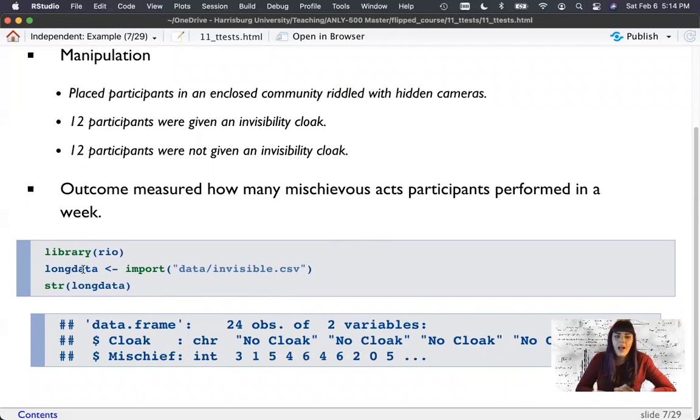And so we have our data set in what's considered long format, where I have a column for my IV, this cloak or no cloak, and a column for my DV, mischievous. This is why I said you just have to know what your data represents. Which is how R likes you to set up your columns for analysis. You just have to know that the groups are either between or within. So at this moment, we're going to treat this as a between subjects design.